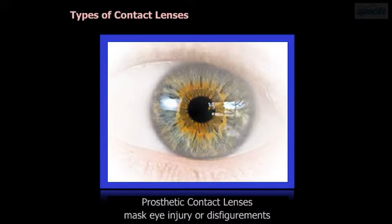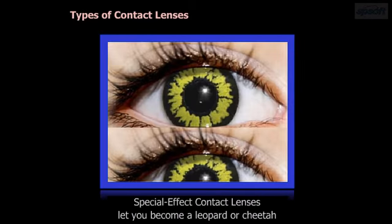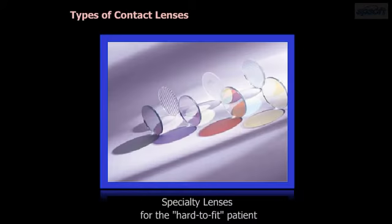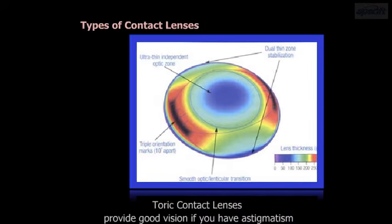Prosthetic contact lenses mask eye injury or disfigurement. Silicone hydrogel contacts transmit more oxygen to your eyes. Special effect contact lenses let you become a leopard or cheetah. Specialty lenses are available for the hard-to-fit patient. Toric contact lenses provide good vision if you have astigmatism.